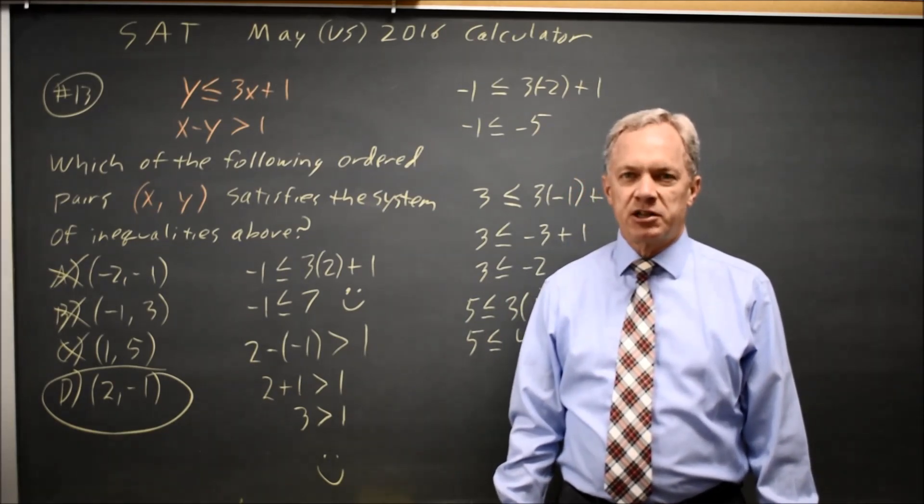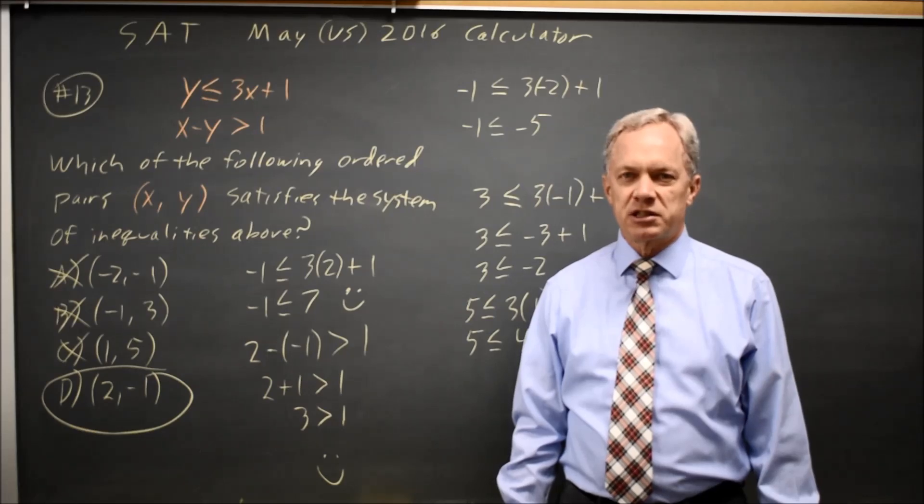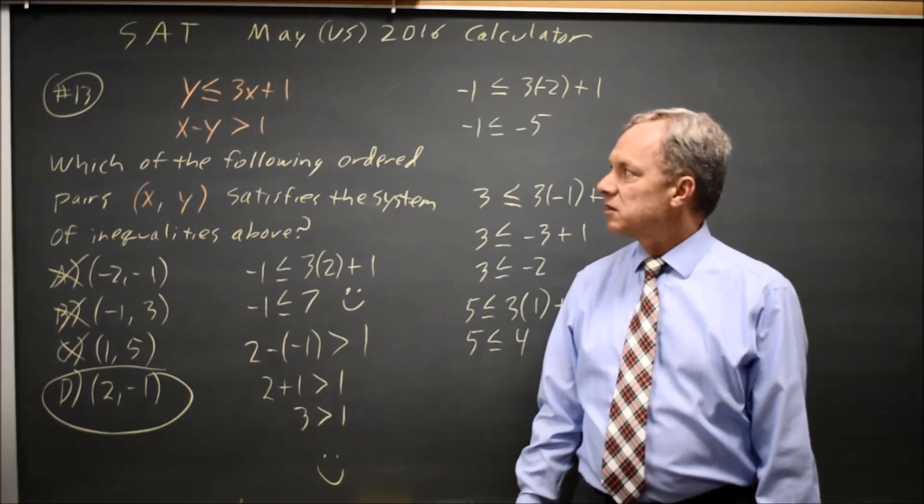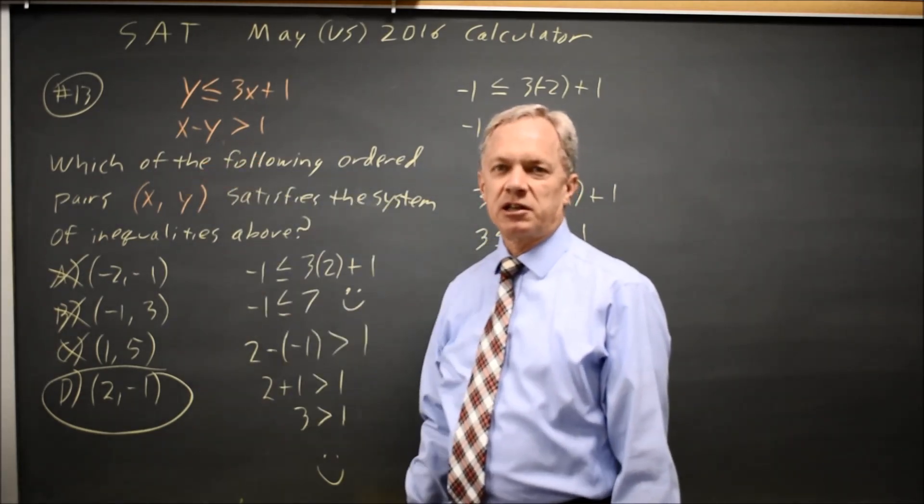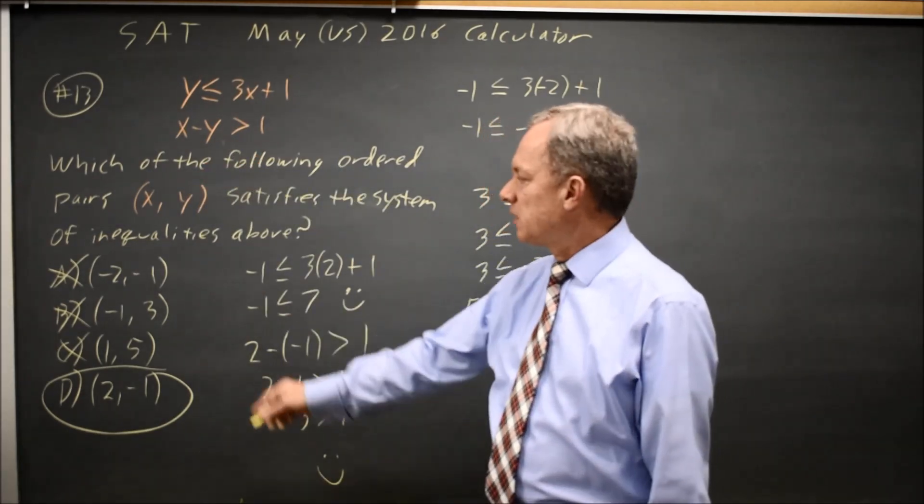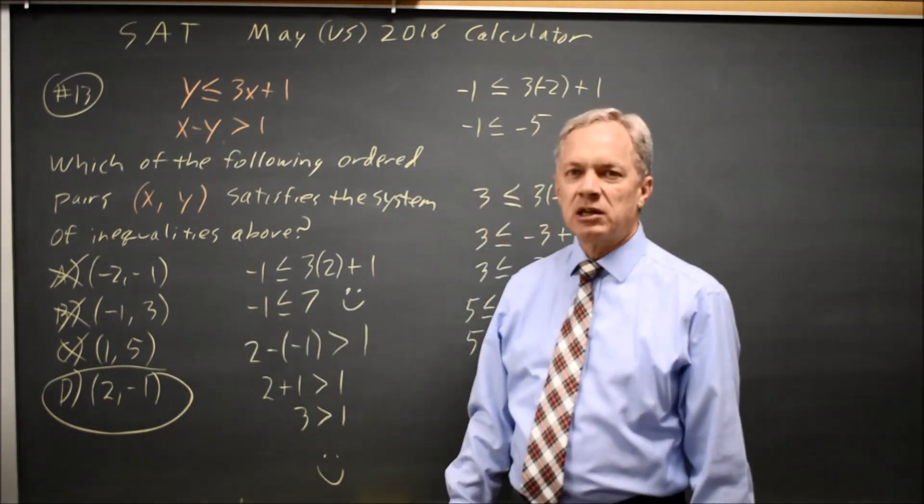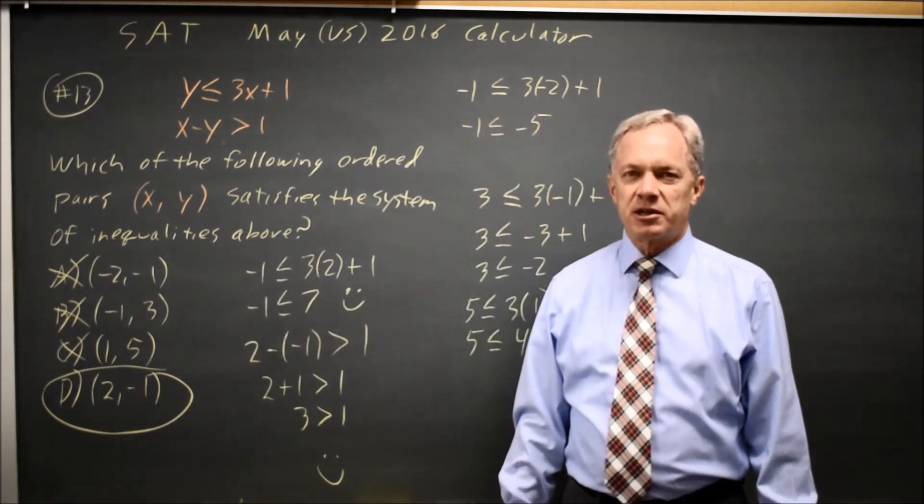Often substituting your answer choices is the easiest way to find the solution to this sort of system of inequalities. As an alternative, you could solve the second inequality for Y, graph it on your graphing calculator, check the direction of the inequalities, and see which of these points fits. But I think it's easier to just substitute them in.